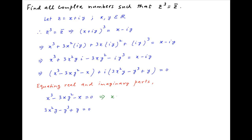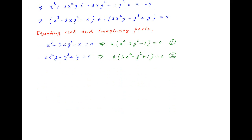In the first case, the equation can be written as x times in brackets x square minus 3y square minus 1 is equal to 0. Let's call this equation 1. And in the second case, the equation can be written as y times in brackets 3x square minus y square plus 1 is equal to 0. Let's call this equation 2.